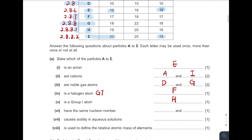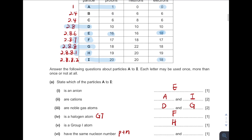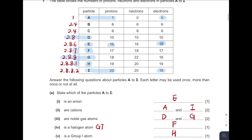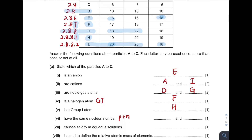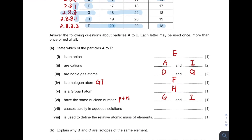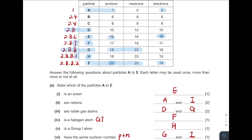Next, which one has the same nucleon number? Nucleon number means the sum of protons and neutrons. So which two have the same nucleon number? It is G and I — the total is 40. Next, which one causes acidity in aqueous solution? Acid is due to the presence of hydrogen ions. Hydrogen has only one proton, so the answer is A.